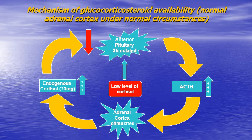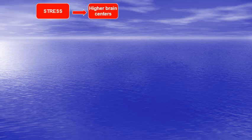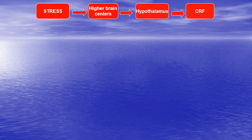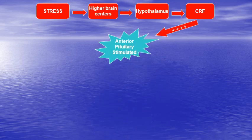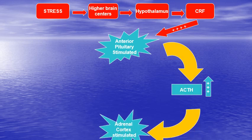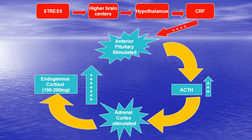When a person faces a stressful situation, stress signals pass through higher brain centers to the hypothalamus, releasing corticotropin-releasing factor. This orders the anterior pituitary to release ACTH, which stimulates the adrenal cortex to produce 100 to 200 mg of cortisol to face the stress — about 5 to 10 times the normal daily secretion. This then feeds back to the anterior pituitary to stop further ACTH secretion.